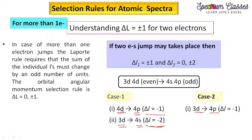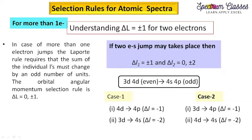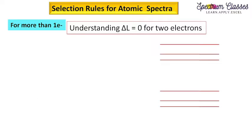In another case, 3d can jump to 4p giving ΔL = −1, and 4d can jump to 4s. The goal is always to get an odd number. For one electron the ±1 condition must be fulfilled, and for the other electron the 0 or ±2 condition must be fulfilled — only then can we get an odd total ΔL for a two-electron transition. This is a purely hypothetical example.